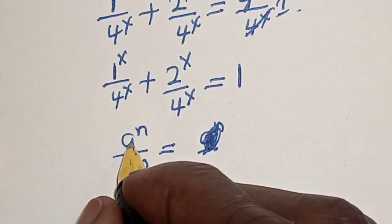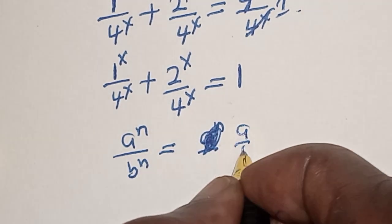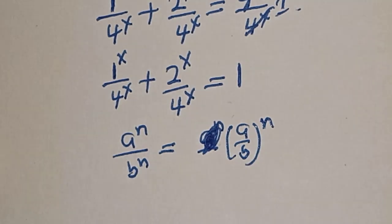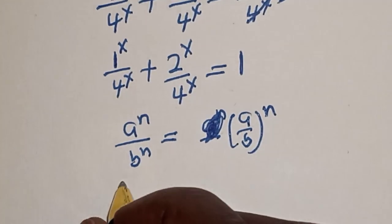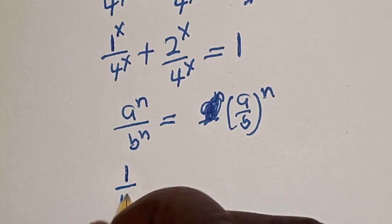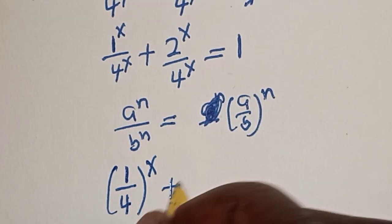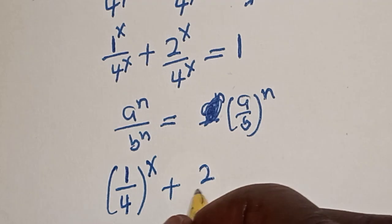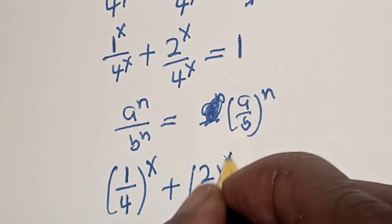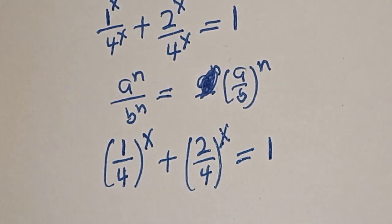Remember: if you have a raised to the power n divided by b raised to the power n, this equals (a over b) raised to the power n. Applying this rule, we get 1 over 4 raised to the power s plus 2 over 4 raised to the power s is equal to 1.